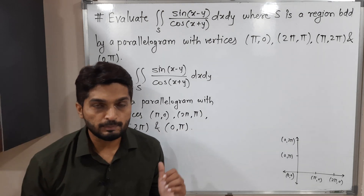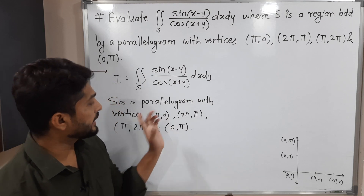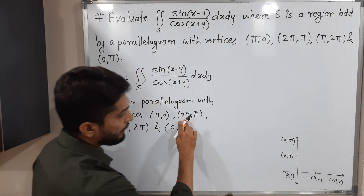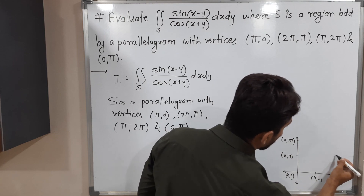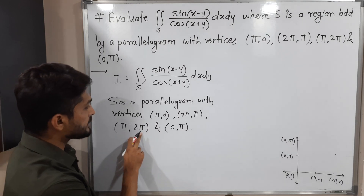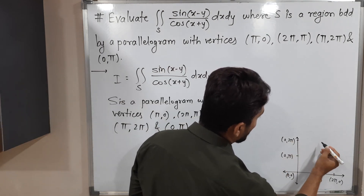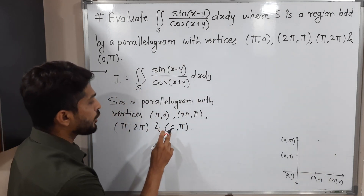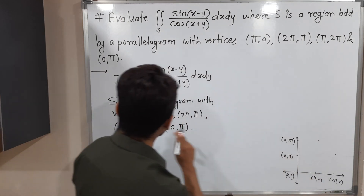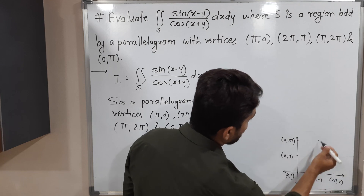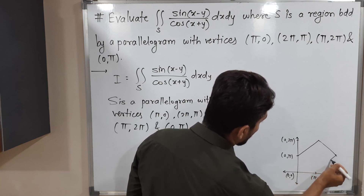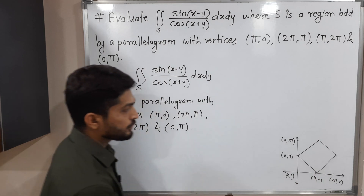Let us find these points and draw the parallelogram. Pi comma 0 lies on the x-axis. 2pi comma pi is the second point. Pi comma 2pi has x-coordinate pi and y-coordinate 2pi. And 0 comma pi lies on the y-axis. So these are the four vertices of the parallelogram.